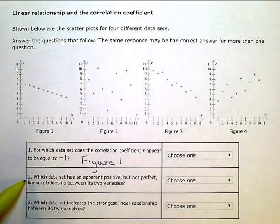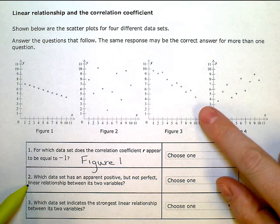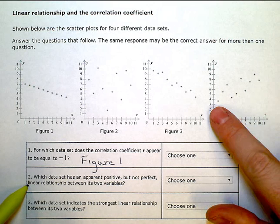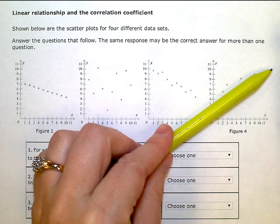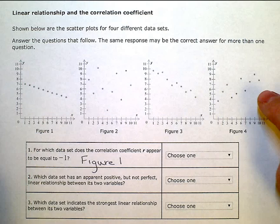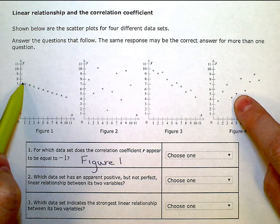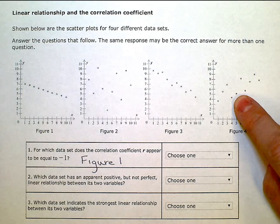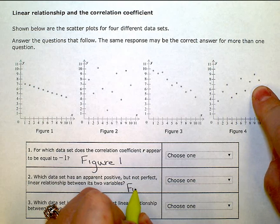Which data set has an apparent positive but not perfect linear relationship between its two variables? That would be figure 4. I have a positive relationship. They start low, they tend to go high. If I found a line of best fit, it would have a positive slope. But it's not a perfect relationship. They're not lined up in a perfectly linear pattern. So this would be figure 4.